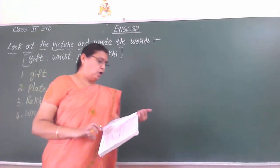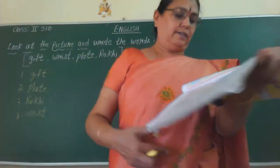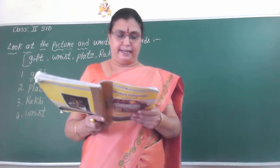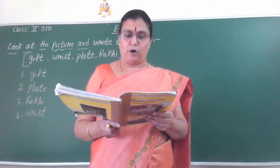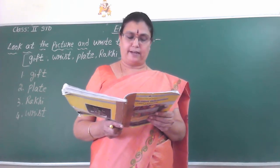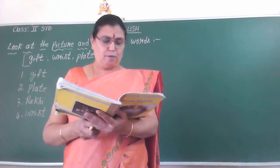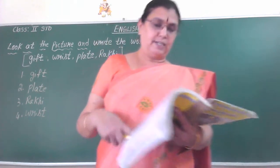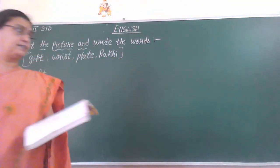These are the four options given to write in the textbook. Okay? Now, page number 10 — choose one word from each box and make as many sentences as you can. One is done for you. See, how many words are here? She, he — three columns are given.